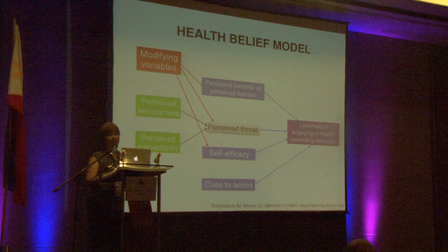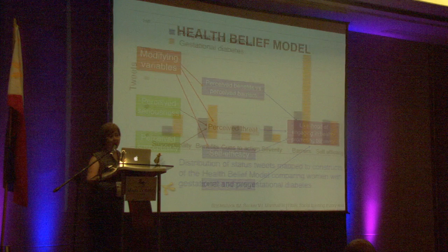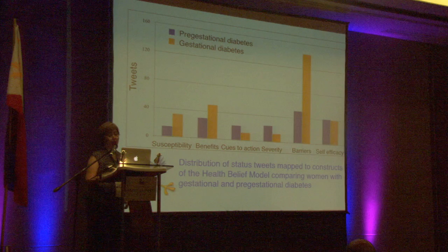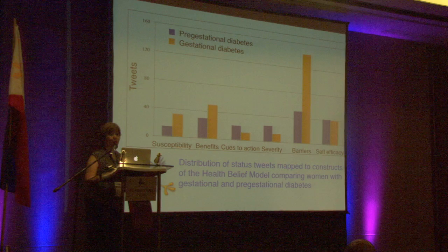This is the distribution of tweets according to the constructs. The blue bars represent women who had diabetes before pregnancy — pre-gestational — and the yellow bars represent women with gestational diabetes who were only diagnosed during the pregnancy.